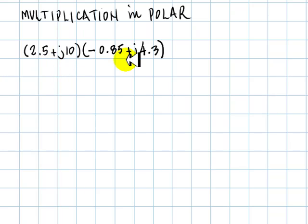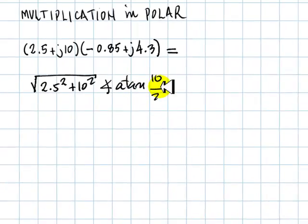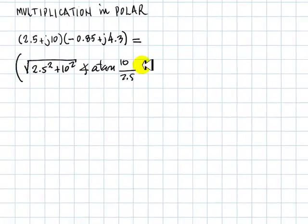In cases where the multiplication includes either numbers in polar form, or the final result is going to be given in polar form, we find it convenient to convert all numbers to polar form, and do the multiplication in polar. That's what I'm about to do. In polar form, the first number has a magnitude that is square root of 2.5 squared plus 10 squared. That is the absolute value. And has an angle that is the arc tangent of 10 divided by 2.5.